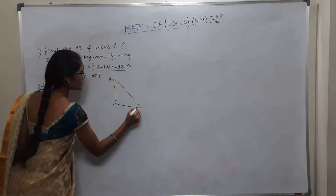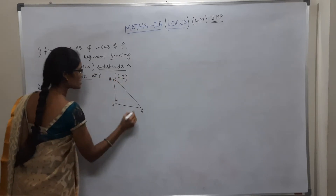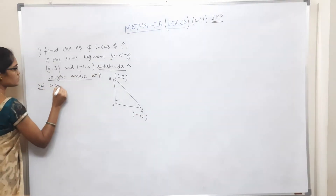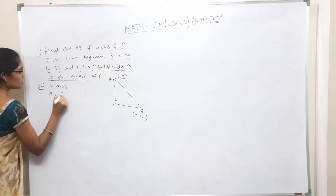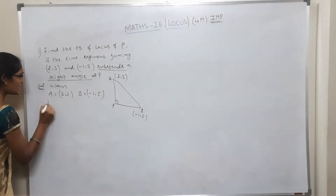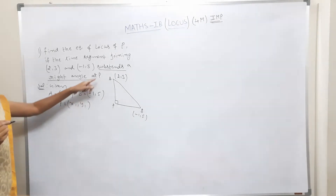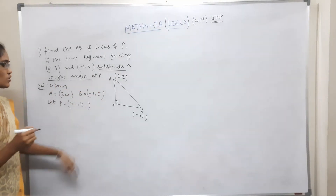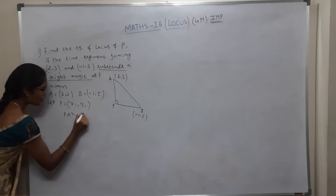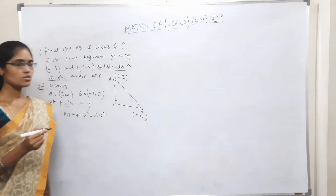Let P equal to (x1, y1). Given A is equal to (2,3) and B is equal to (-1,5). The given condition is that it subtends a right angle at P. The right angle triangle condition is: PA² + PB² = AB².